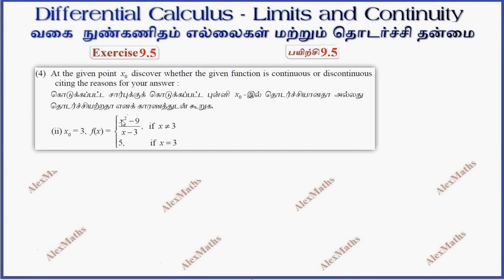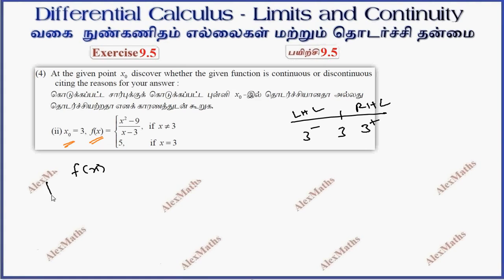Sub-question 2. f(x) has x0 equal to 3. For the left-hand limit, limit extending to 3 minus, this is x squared minus 9 divided by x minus 3. Direct substitution gives 0 by 0.